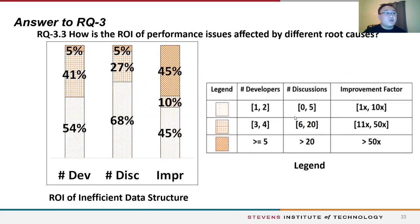Finally, we compared the return on investment for different root causes. As shown in the legend table, darker color means higher value. In general, different root causes have very different return on investment. The details are in our paper.